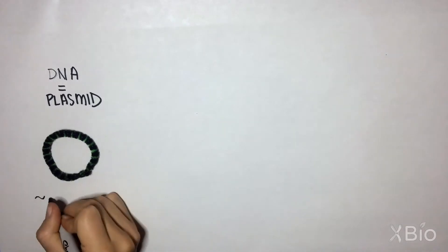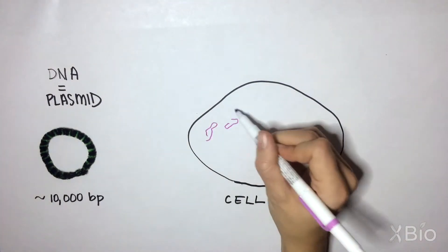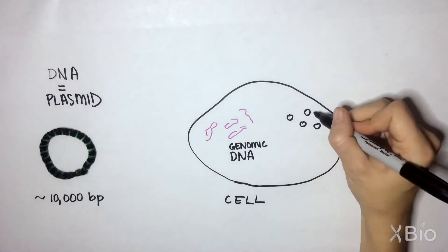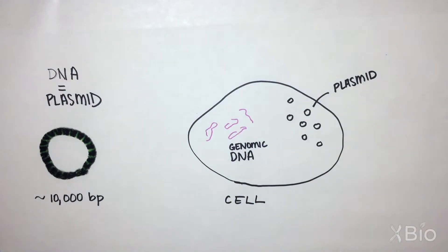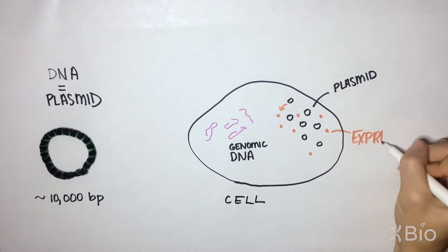For ease, we often work with small functional circular DNAs on the order of 10,000 base pairs called plasmids that express the DNA of interest. Plasmids can replicate and be maintained in a cell and remain independent of the genome, and they will continually express this protein of interest.